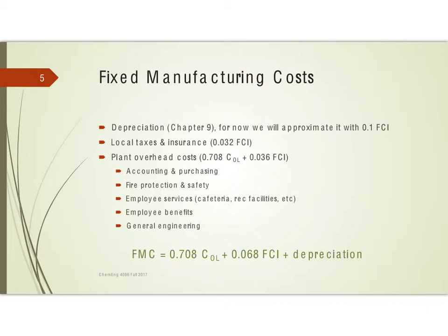We also have fixed manufacturing costs. This includes depreciation, which will be covered in chapter 9. For this chapter, and as a quick estimate, we approximate depreciation as 10% of the fixed capital investment. Local taxes and insurance are also proportional to the cost of the equipment, at 0.032 times FCI. Plant overhead costs are related to both operating labor and fixed capital investment, and include accounting, purchasing, fire protection and safety — where larger facilities pay more — employee services, employee benefits, and general engineering.